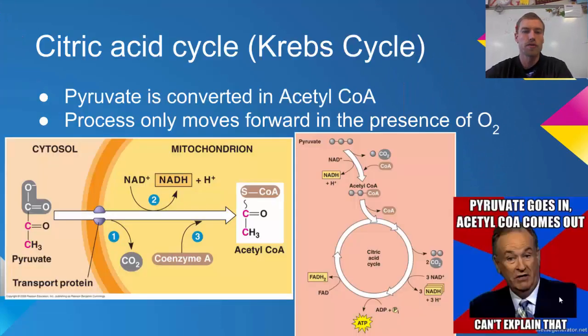Pyruvate is taken from the process of glycolysis and transported into the mitochondria. As it's being transported, it kicks off a CO2, produces an NADH, and then coenzyme A is added to it to produce the molecule called acetyl-CoA.